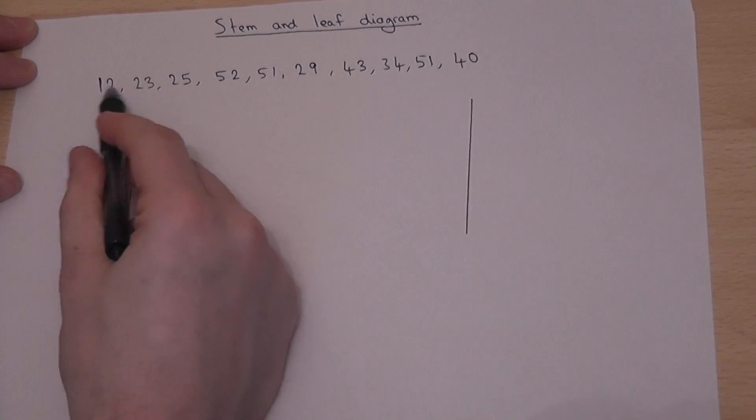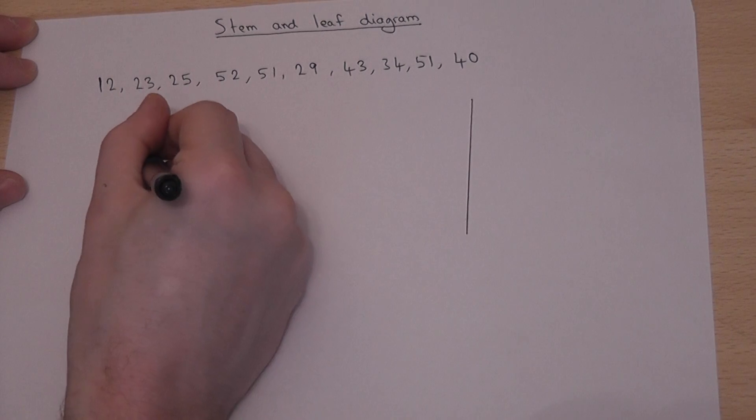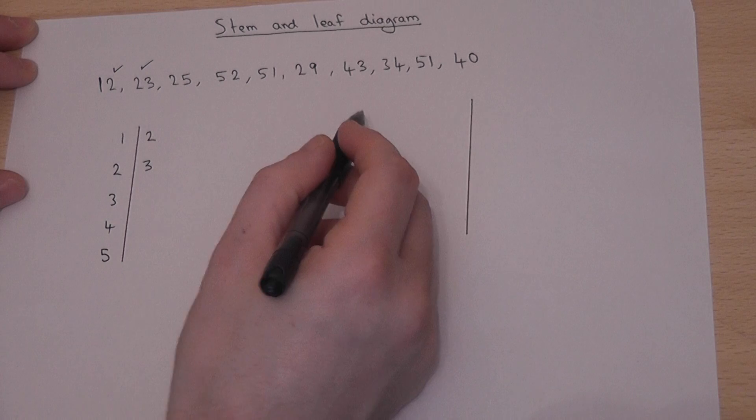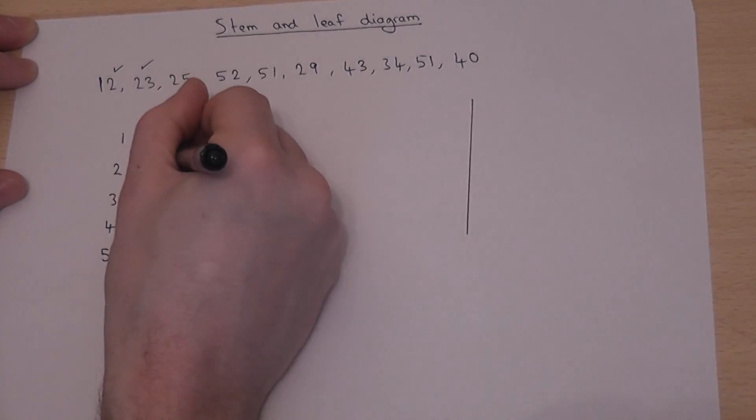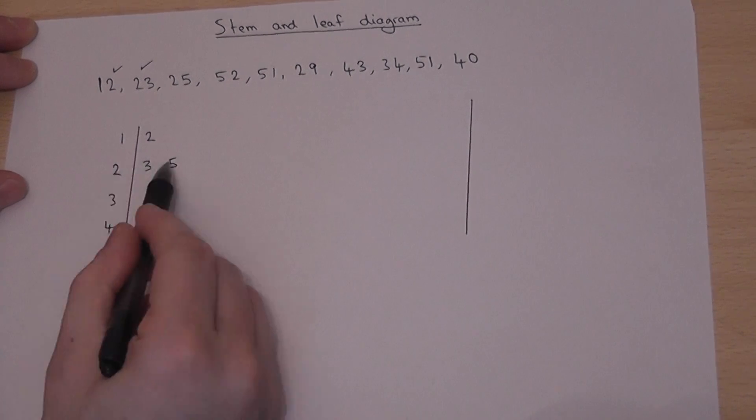So the number 12 is a 10 and a 2. 23 is 23. Then 25, so 23 and 25. So as you can see, 10 unit, 10 unit.